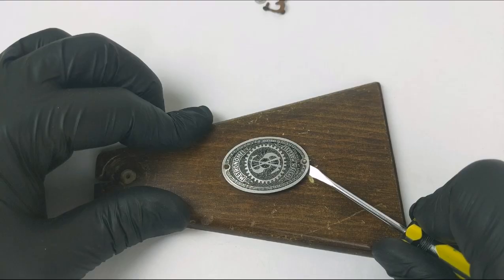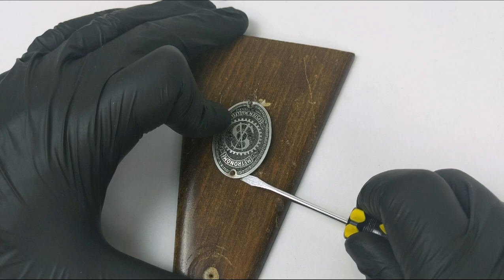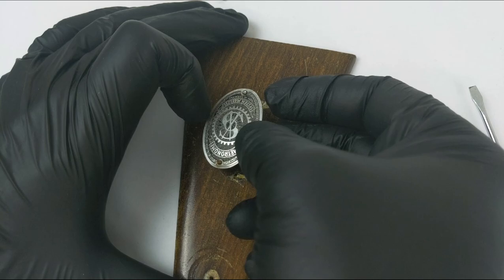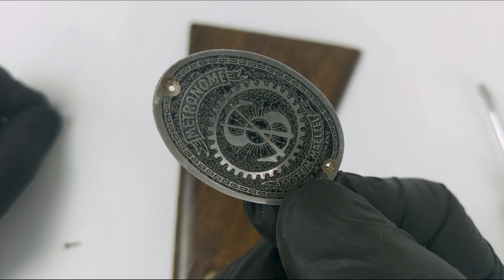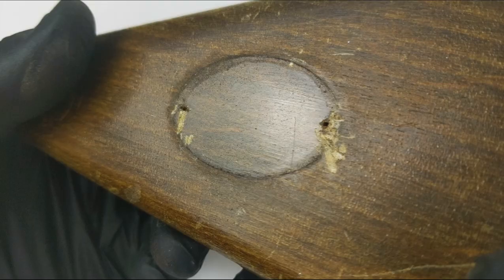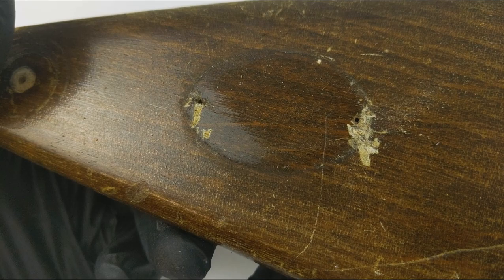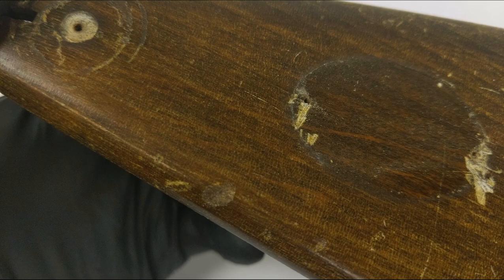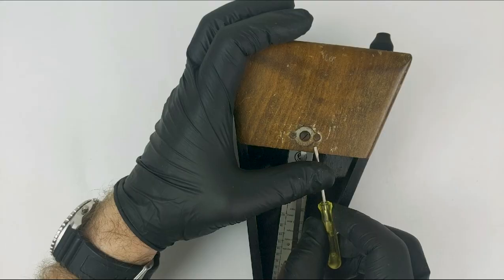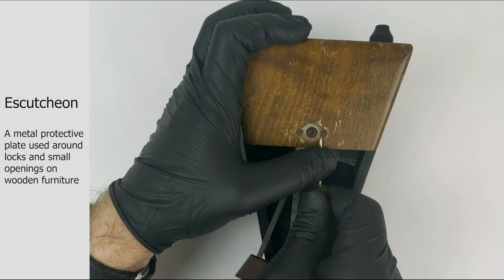The finish is in terrible condition, so knowing that, I'm not being super careful when I'm removing some of these outside pieces. Therefore, you'll see that the screwdriver I'm using is actually making some slight indentations, but only in the finish. Here you can see how the finish gets damaged, especially when trying to remove these escutcheons on the outside of the body.